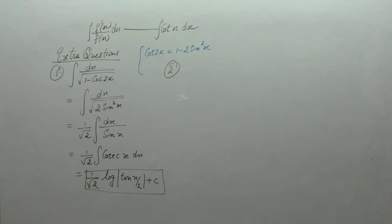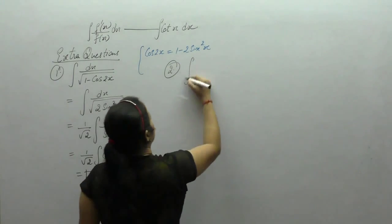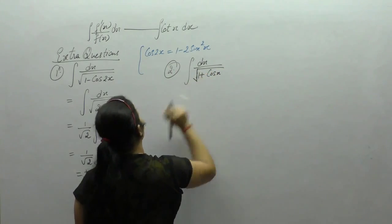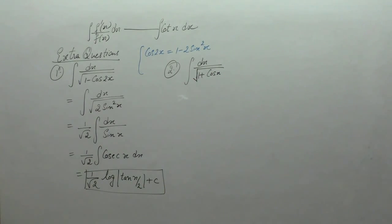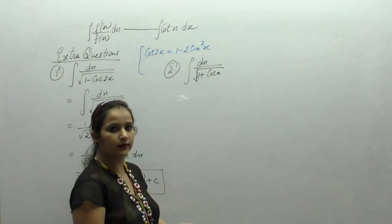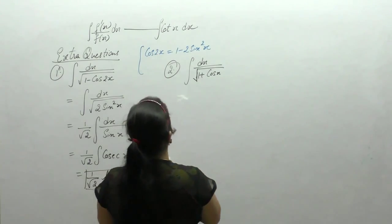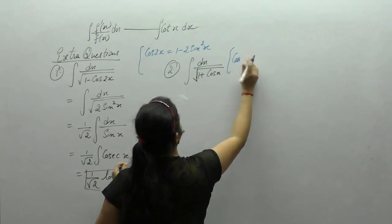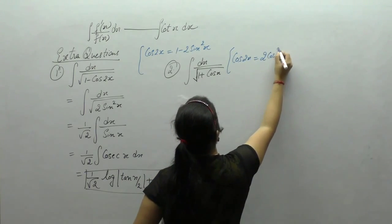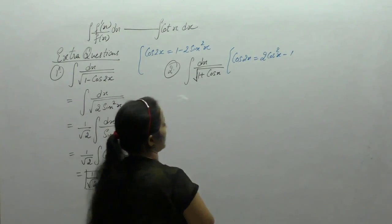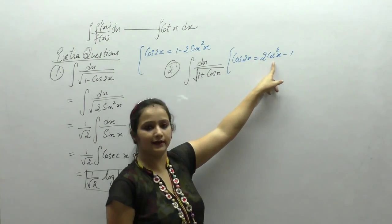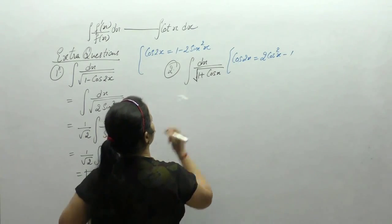Question 2: Integral of 1 upon square root of 1 plus cos x. We know cos 2x equals 2 cos² x minus 1, so 1 plus cos 2x equals 2 cos² x. Since the angle here is half, we divide the angle by 2, giving 1 plus cos x equals 2 cos²(x/2).